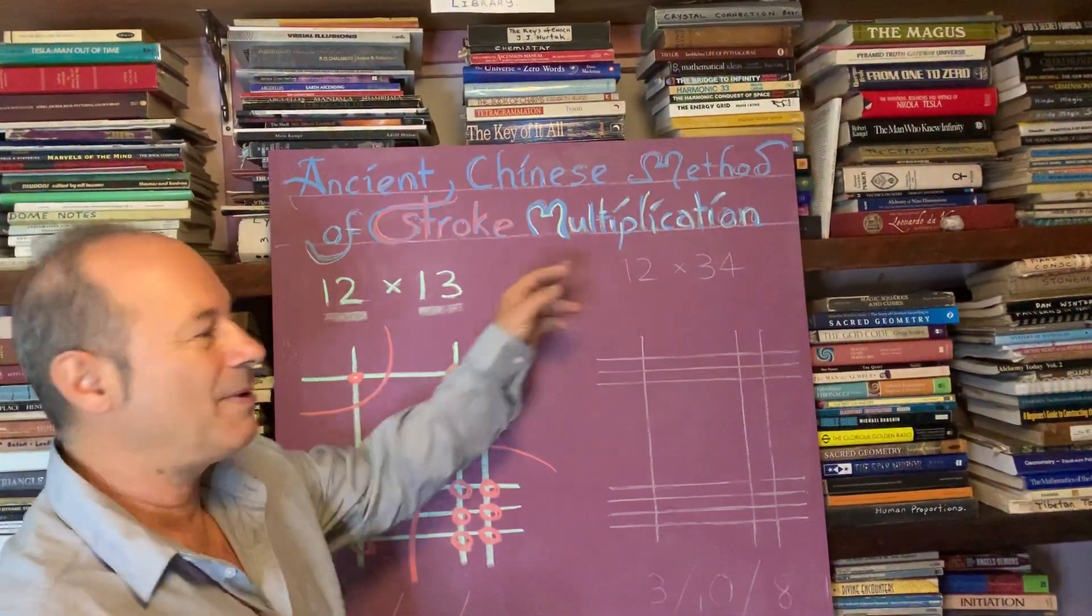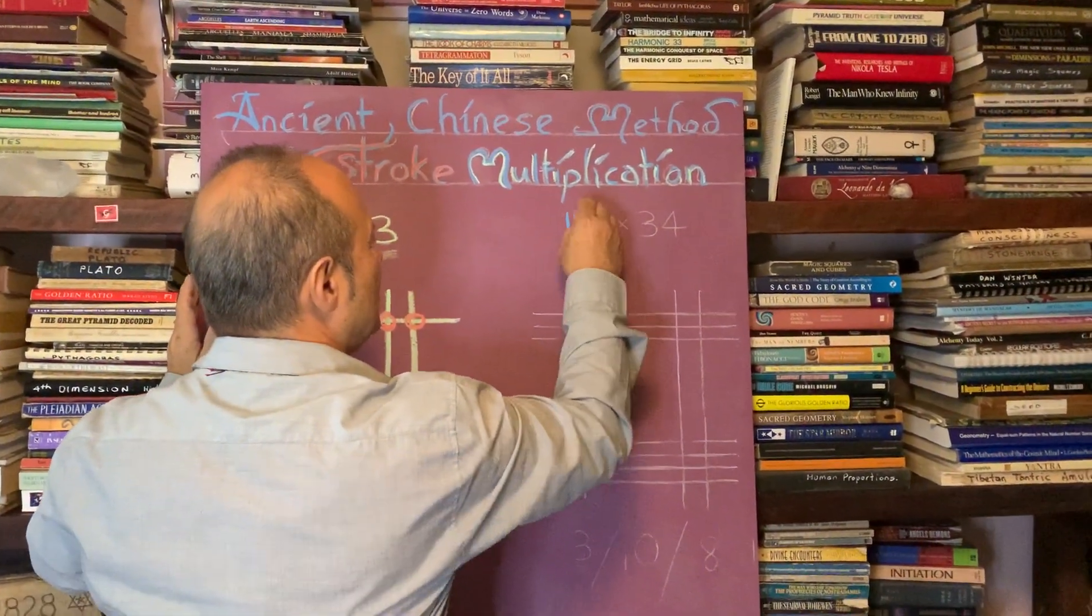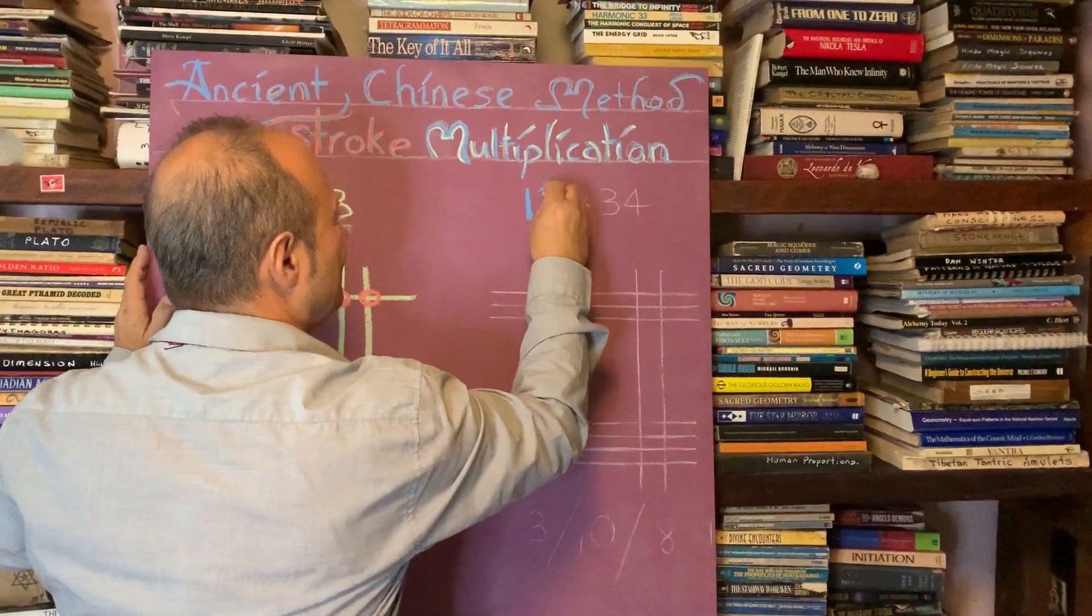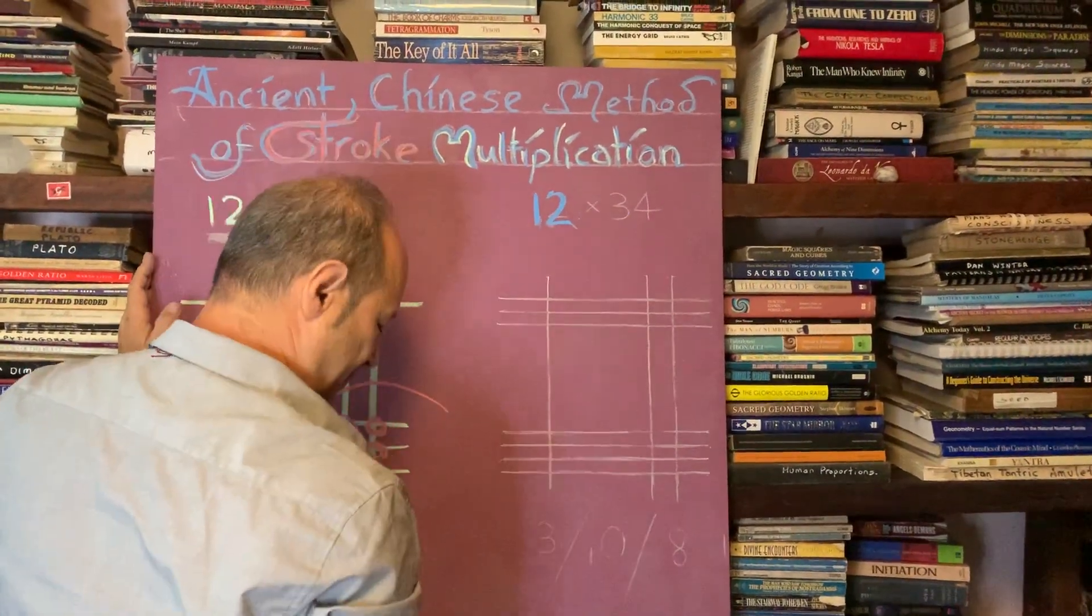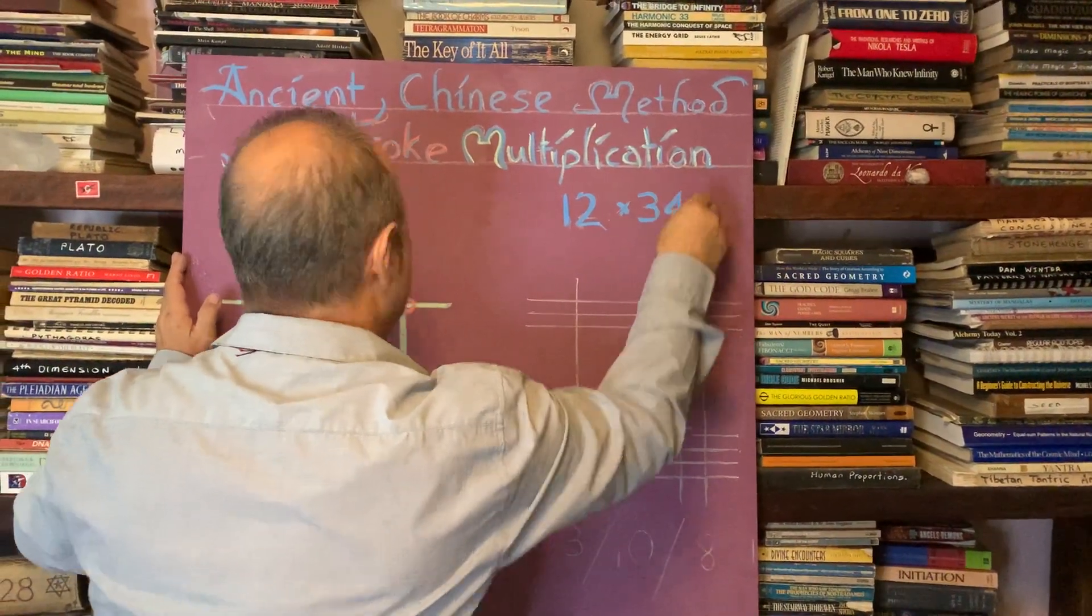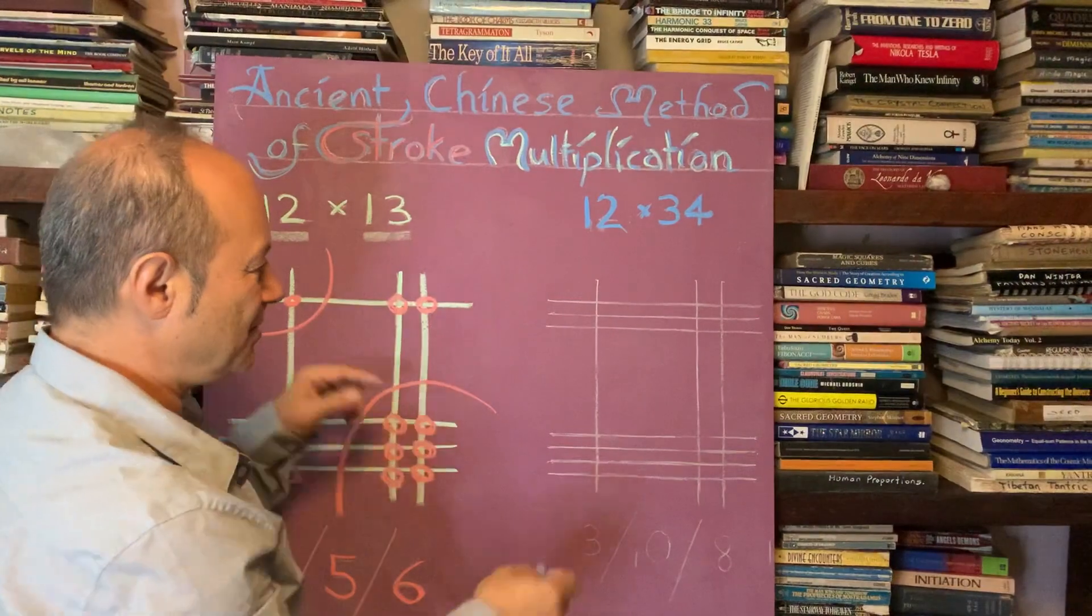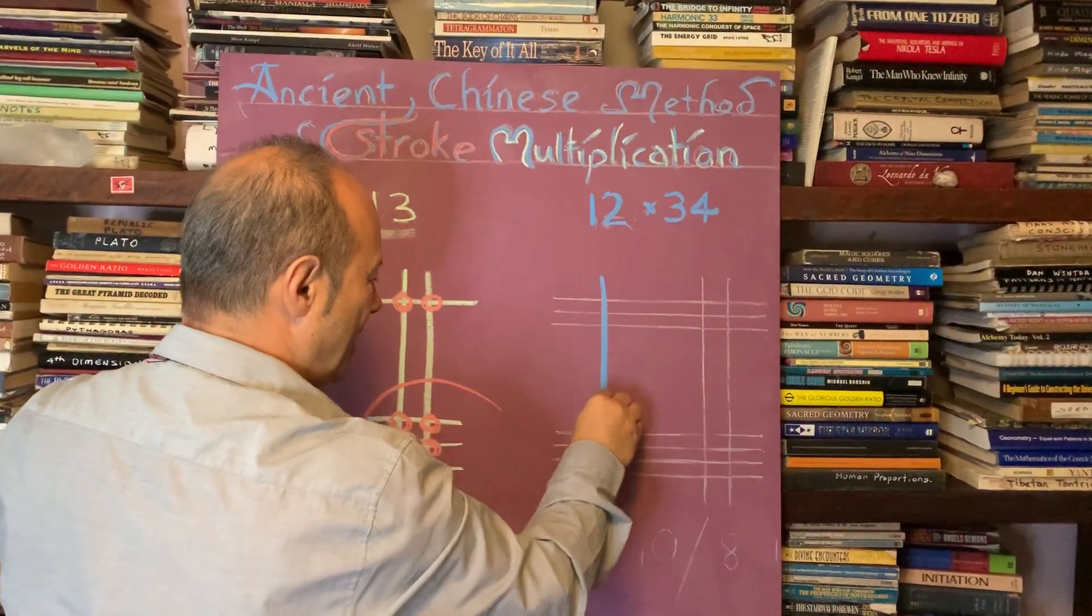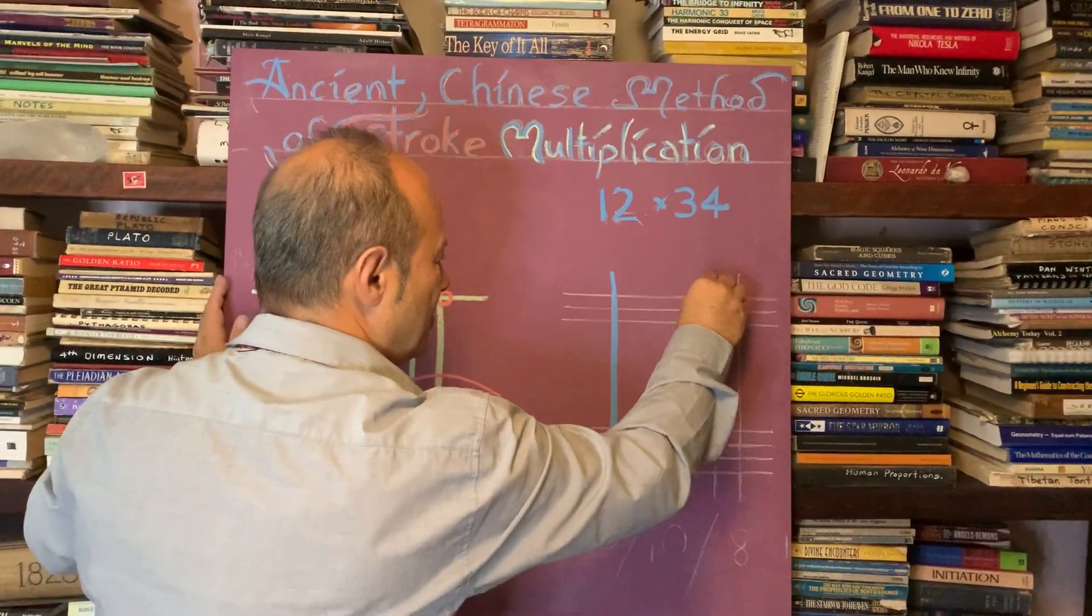So let's try one more, just a bit bigger. We'll still use 12 again. We'll use 12 times 34. So we've already done the 12 here. So how do we do 12?